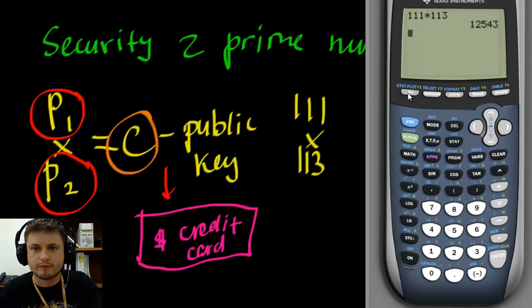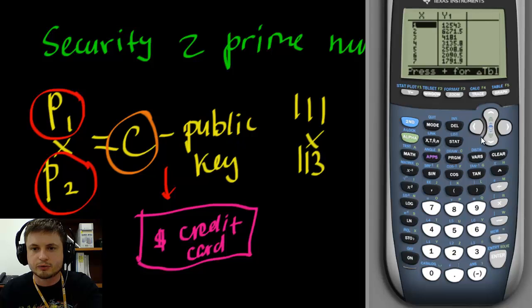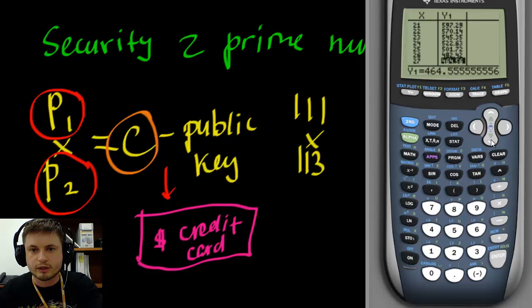Go into your Y equals function and enter 12,543 divided by x. Now what is this function? This function will basically show us all of the factors available in this number, so all the whole number factors. Now press enter and to check this we're going to go into our table, so second table. And so here are all of the values for x and y. So here what we're looking for is whole factors or whole numbers in the y column. So right here we already see 4181 is one of the factors which already means that it's not a prime number. And as you keep going down you'll find more and more. So somewhere over here you're going to find another factor 339.